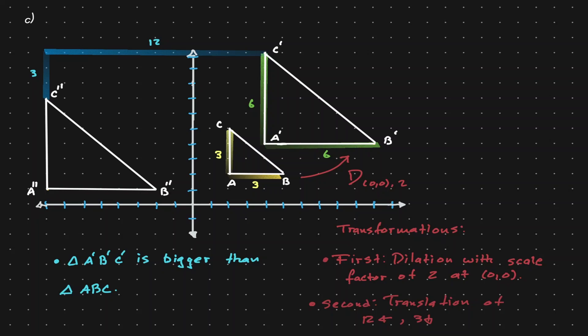So we have identified the transformation composition. Now let's represent this using the correct notation. The first transformation was a dilation, so a dilation at 0,0 with a scale factor of 2, and then we follow with the composition notation. And then on the left hand side we're going to write down the second transformation, which was a translation of 12 units to the left and 3 units down.